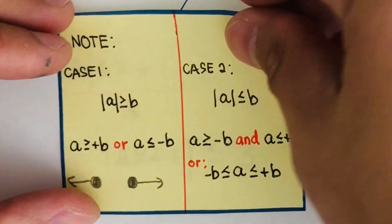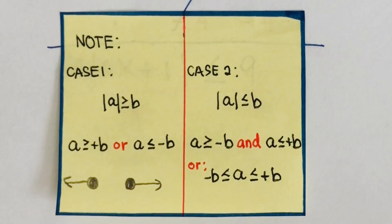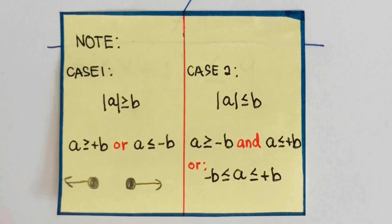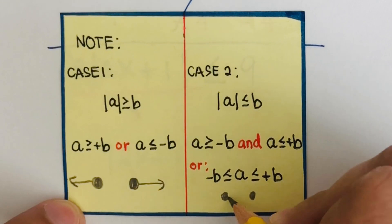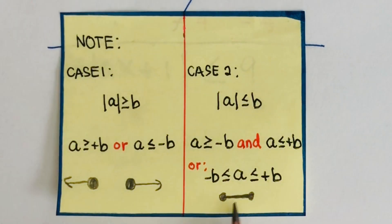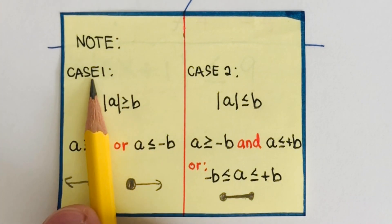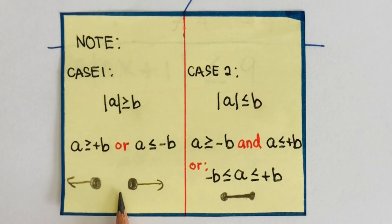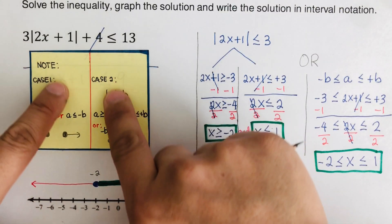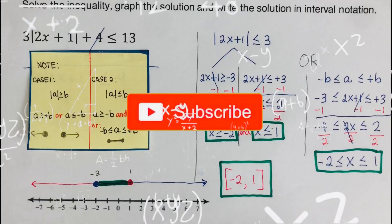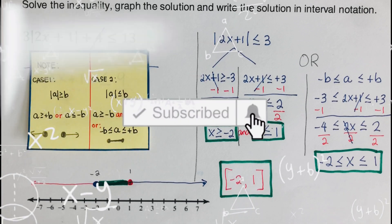To summarize the two cases: case one produces two graphs going away from each other on the number line — a disjoint union. Case two produces two graphs that intersect, with the solution being the middle segment. This is how the graph looks for a less than case versus a greater than case for absolute value inequalities. If you find this video helpful, hit like and subscribe for more math videos.